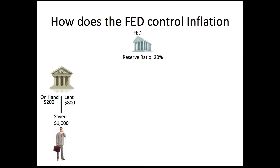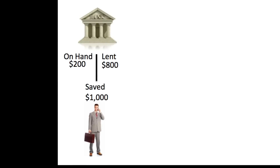So how does the Fed actually control the amount of money in the system? They can physically print more money, but the way they commonly adjust it is through banks. The Federal Reserve sets something called the reserve ratio — in this scenario, 20%. If a man deposits $1,000 at a bank, the bank records it in his digital account and then lends that money out. Based on the 20% reserve ratio, the bank must keep $200 on hand and can lend out $800.